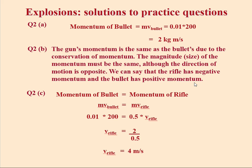Question 2c: calculate the speed of the gun's recoil. First, we say that momentum of the bullet equals the momentum of the rifle. Momentum is mv, so mass of the bullet times the velocity of the bullet equals the mass of the rifle times the velocity of the rifle. So 0.01 multiplied by 200 equals 0.5 multiplied by the velocity of the rifle.